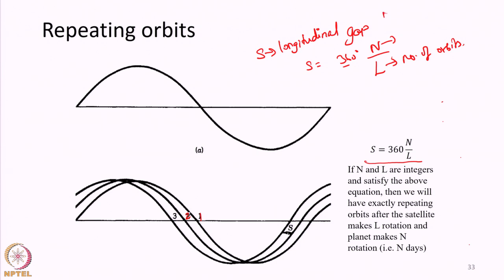Both N and L must be integers — N is also an integer and L is also an integer. They cannot be fractions and should be represented in their lowest form, without a common factor. For example, 16 and 233 have no common factor. The numerator N tells the number of days after which the satellite cycle repeats, and the denominator L represents the number of orbits the satellite makes.